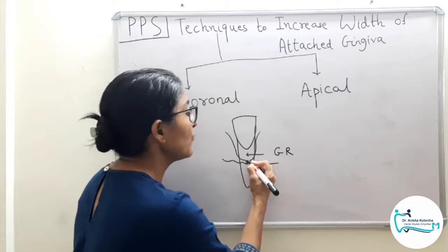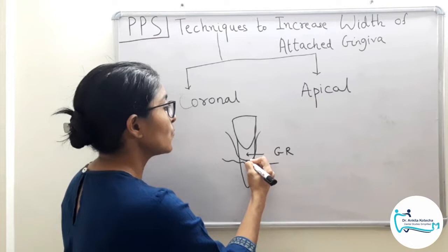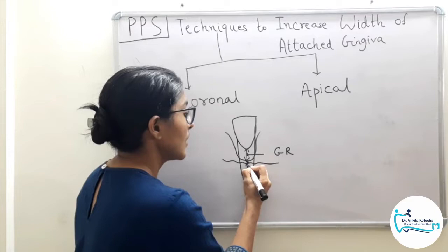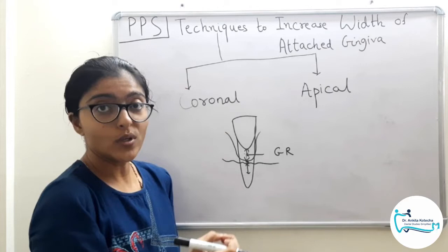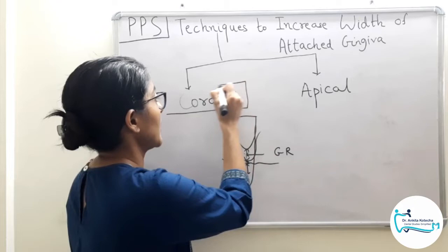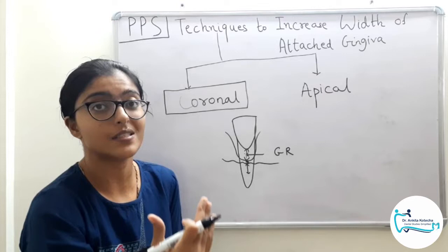If we want to augment the width of attached gingiva there are two types. One is augmenting coronal to the recession, the other is apical to the recession. Procedures where we increase the width by covering the root exposure are called root coverage procedures.